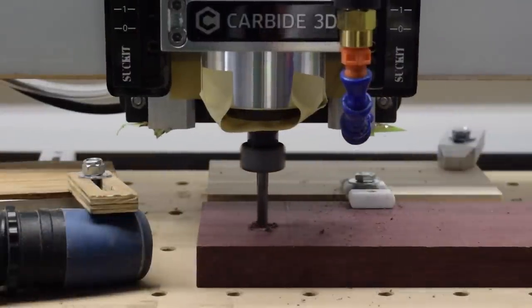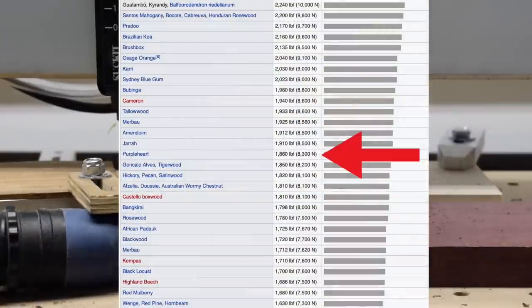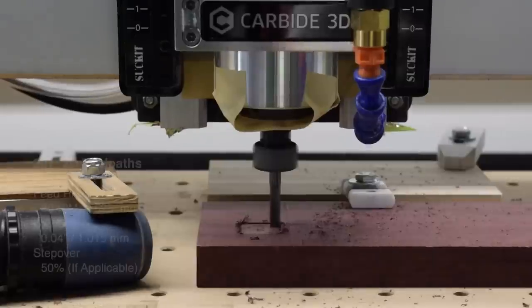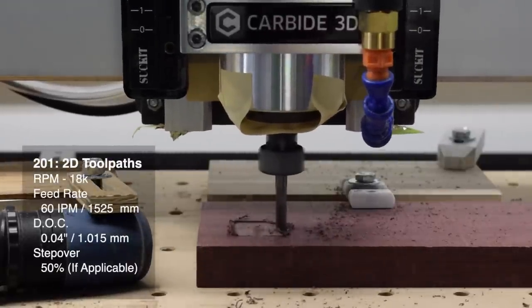And for a properly hard wood like Purple Heart, which is respectably high up on the Janka scale, I would start with 60 inches per minute at a depth of cut of 0.04 inches.